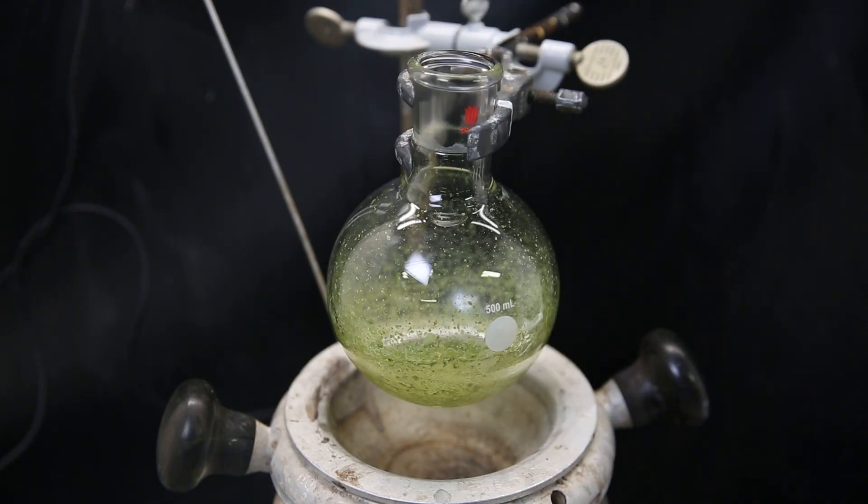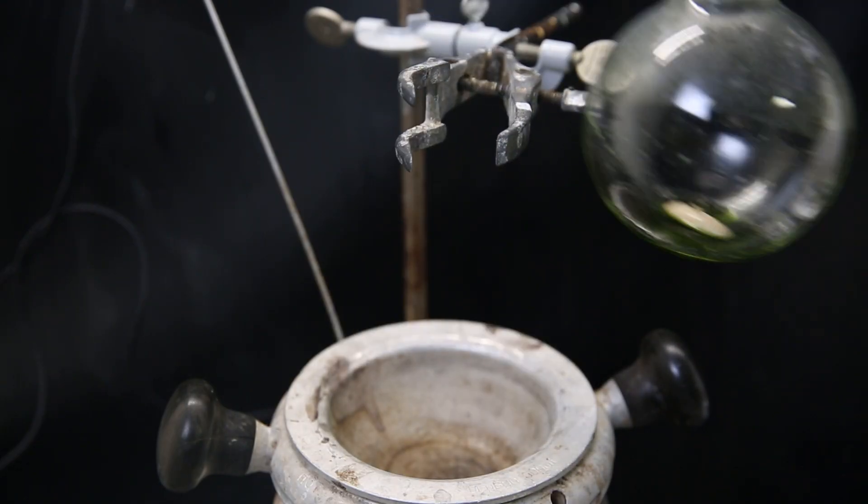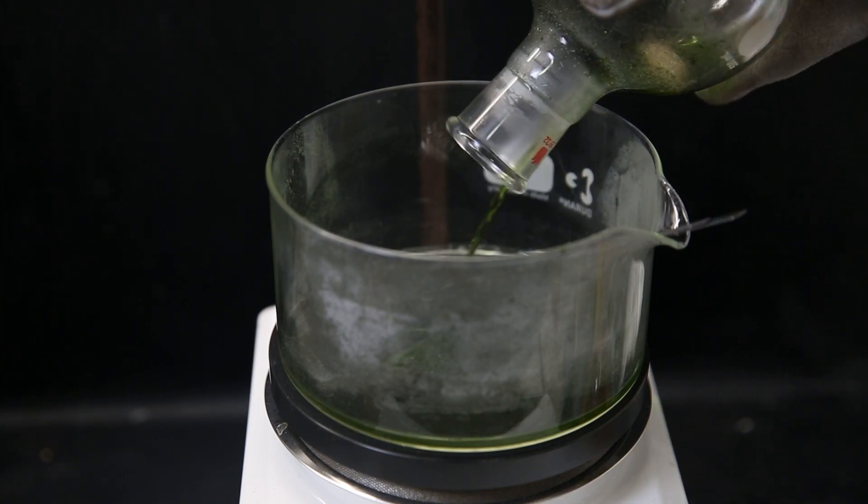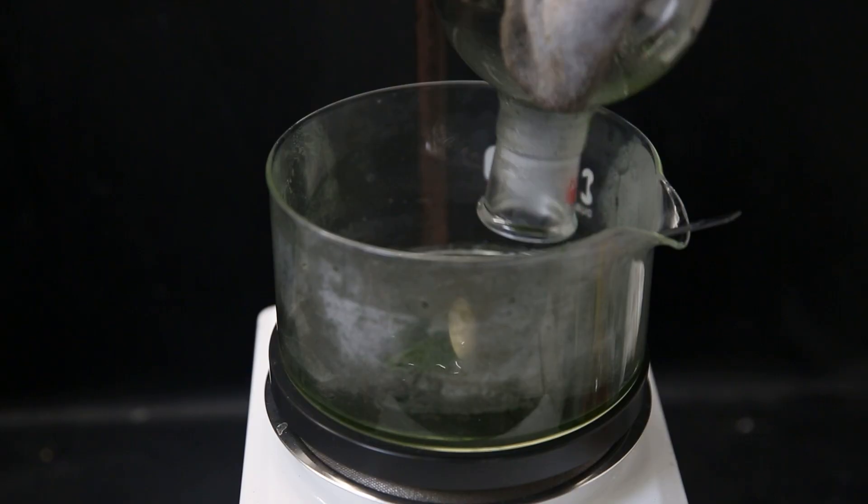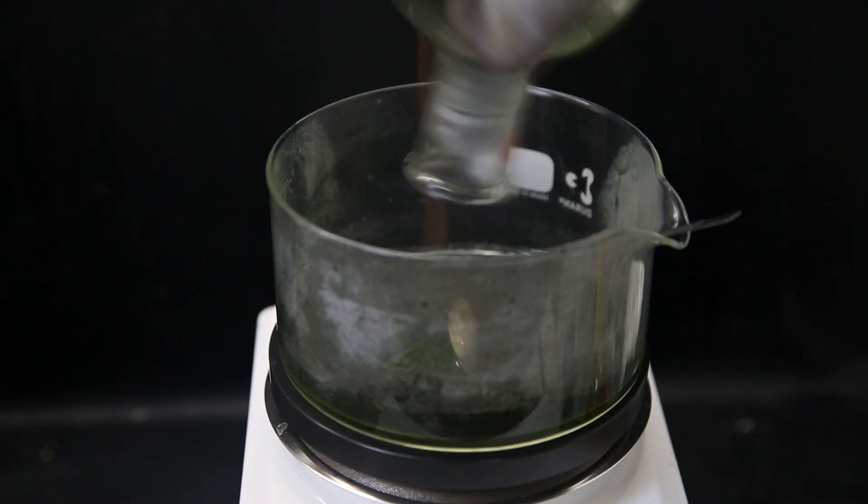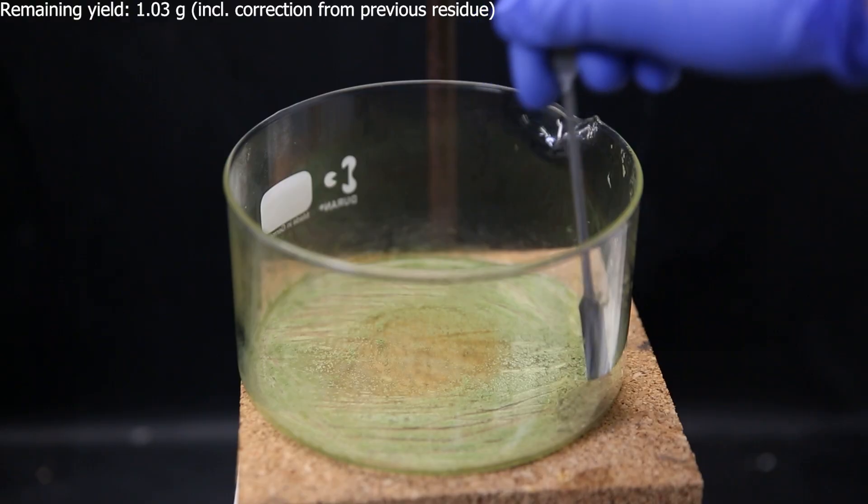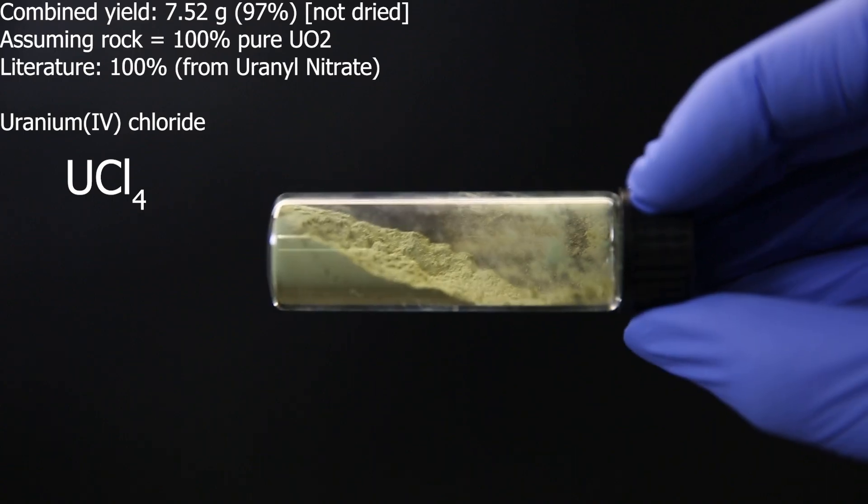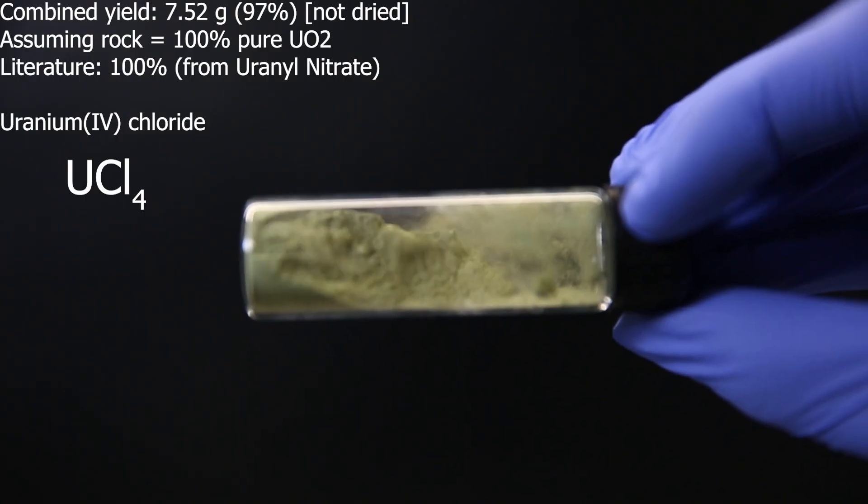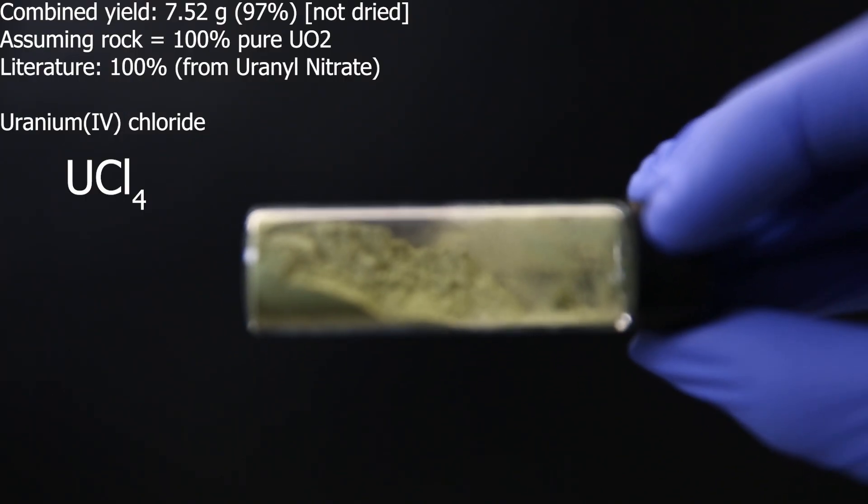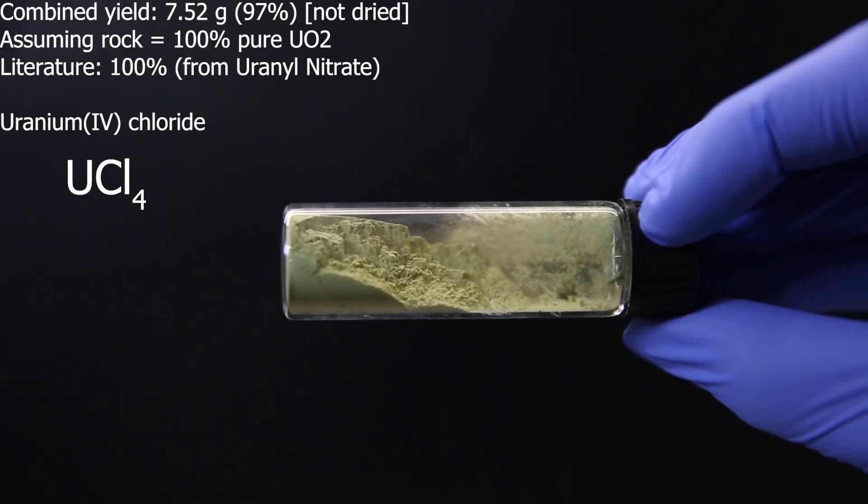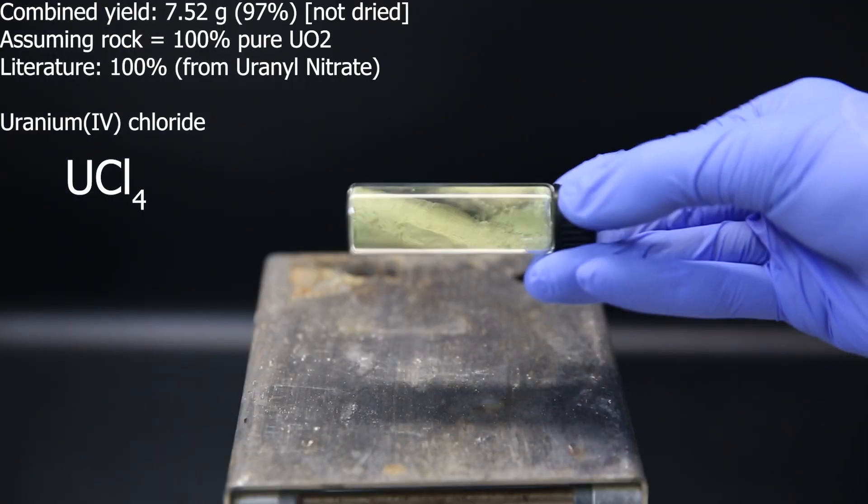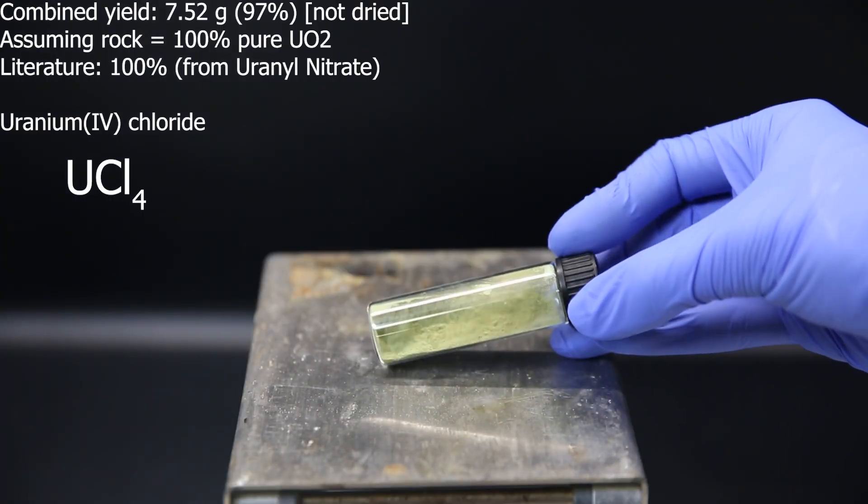When that is done, I see there's still quite a bit in there, but I can't get it out normally like this. So I re-dissolve it in a bit of concentrated hydrochloric acid. I then transfer it all to a crystallizing dish in which I set the residue of the other uranium tetrachloride, to which I also added some hydrochloric acid to dissolve it. And after evaporating all of the acid off, I am left with the remaining uranium tetrachloride, which turned out to be 1.03 grams. I transferred the solid to a vial and the combined yield without drying turned out to be 97%, assuming the rock was 100% pure uranium dioxide.